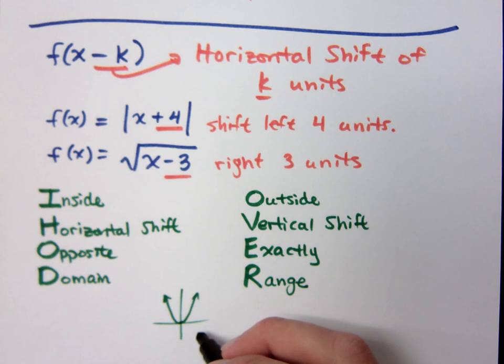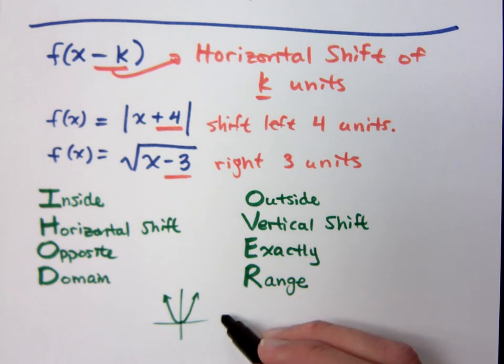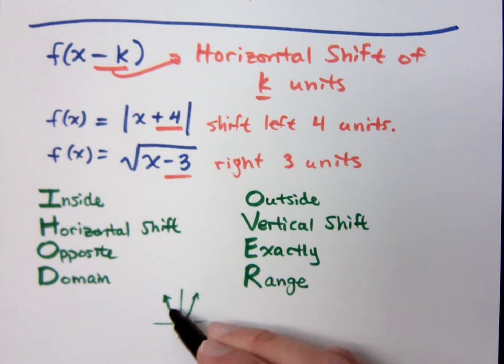If I shift this up or down, won't that also affect the range? Yeah. What if I shift this to the left or the right? Would that affect its domain? No, what's the domain for the parabola? All real numbers. So if you shift left or right, it's still going to be all real numbers.